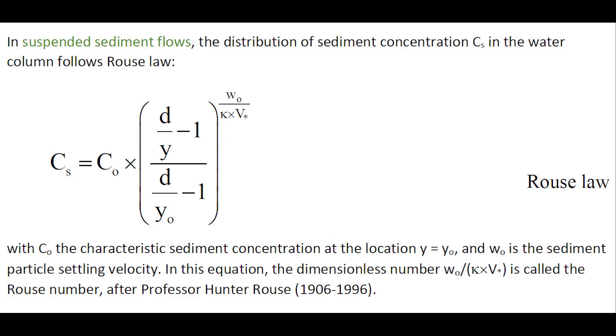In suspended sediment flow, the distribution of sediment concentration in the water column follows Rouse law in which the exponent, also called the Rouse number, is related to the shear velocity and the particle settling velocity. Note that in the Rouse number, kappa is the von Kármán constant, about 0.4.